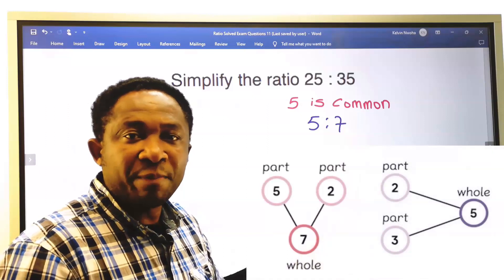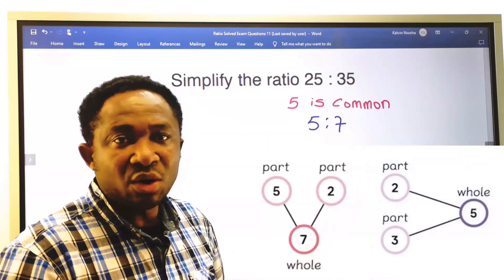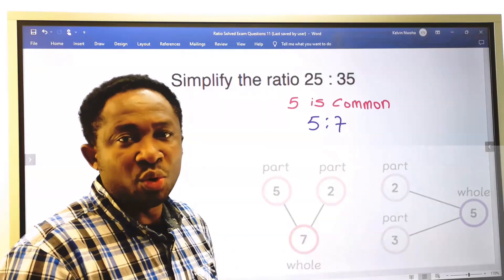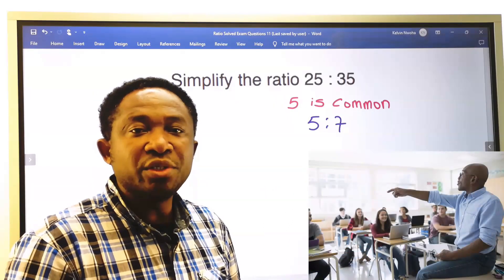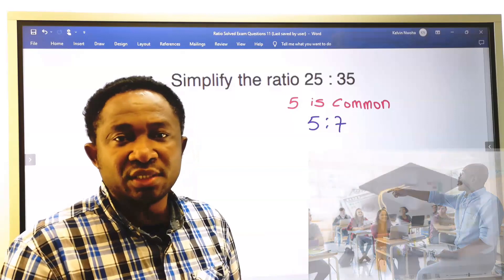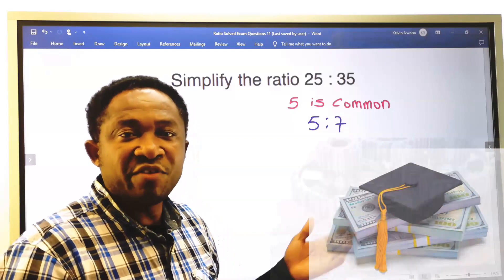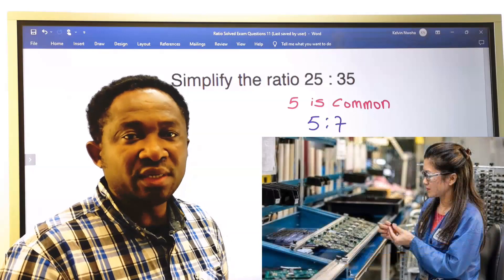This could be part to part or part to whole. This information was not given. It could be the ratio of students to teachers. Probably finances or manufacturing is involved.